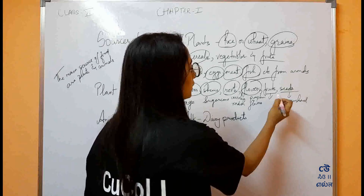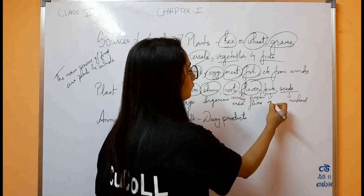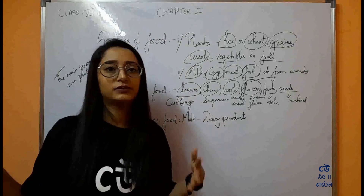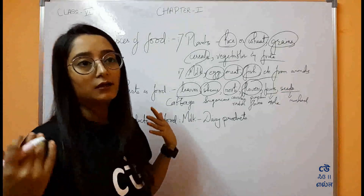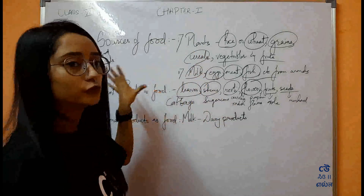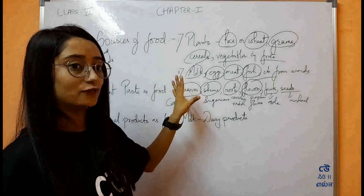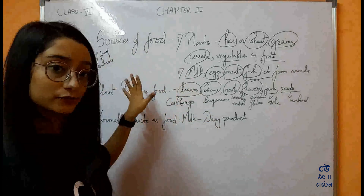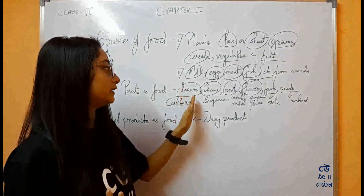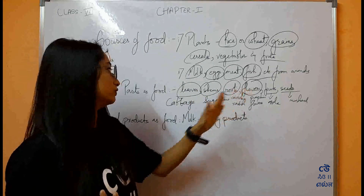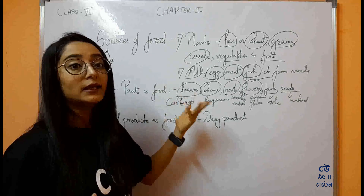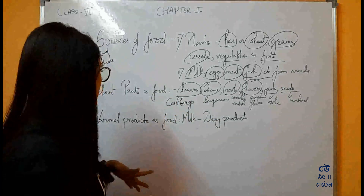In fruits, we can have anything like apples, bananas, guava — everything that you take as fruit. These are the overall items that we get from plants. From plants, we are getting leaves, stems, fruits, flowers, and seeds as edible parts that we can eat in our daily lives.